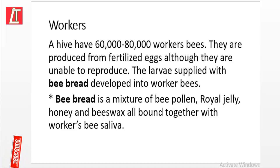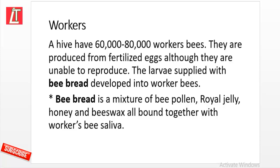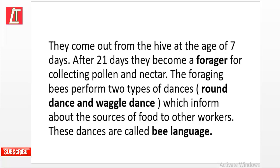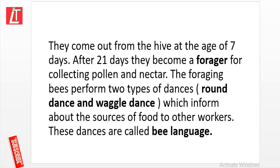A hive has 60,000 to 80,000 worker bees. They are produced from fertilized eggs, and although unable to reproduce, larvae supplied with bee bread develop into worker bees. Bee bread is a mixture of bee pollen, royal jelly, honey, and beeswax, all bound together with worker bee saliva. Workers come out of the hive at the age of seven days, and after 21 days they become foragers for collecting pollen and nectar.